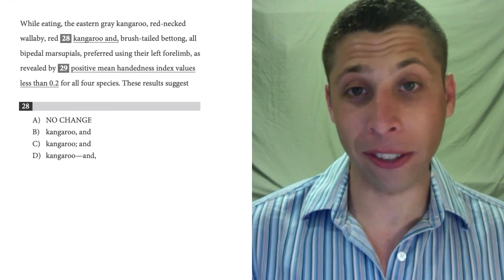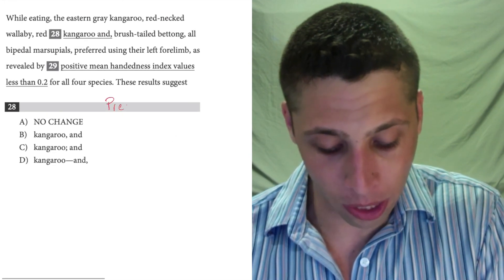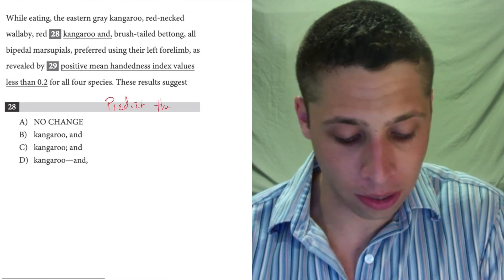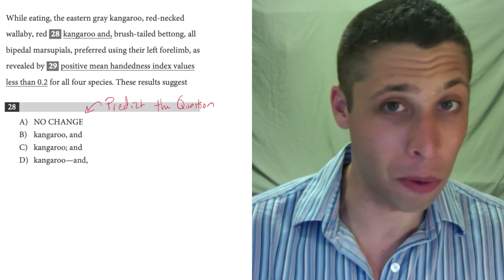So, you can tell from the answer choices that this is testing punctuation, so that's a good example of how we predict the question based on the answer choices. So that helps us know what to care about.